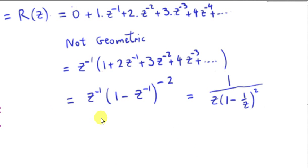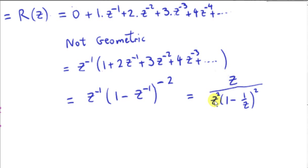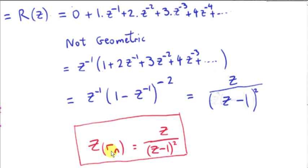We can write R of z as 1 over z times 1 over (1 minus z to the minus 1) squared. Multiplying above and below by z, and taking z squared into the bracket — since both terms share a common power of 2 — we get z minus 1 in the denominator. So the Z-transform of the ramp function is z over (z minus 1) squared.